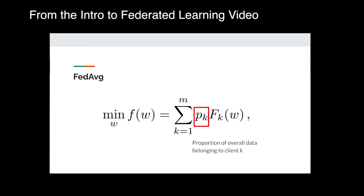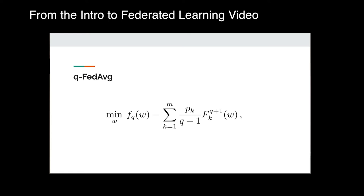I discussed qFedAverage in the previous video. Rather than weighting devices by the proportion of data they have, we penalize worse-performing devices more, incentivizing the model to improve performance on these devices. We raise the loss to the power of q plus one, and we can tune this hyperparameter q — the larger q is, the more worse-performing clients dominate the overall loss, and the fairer the model becomes.